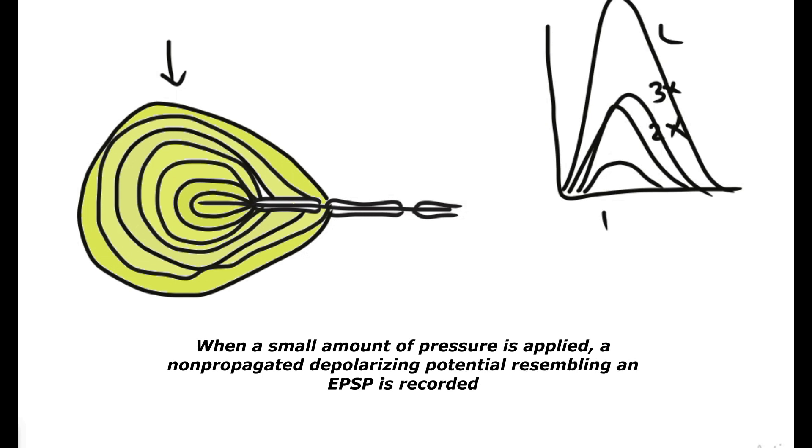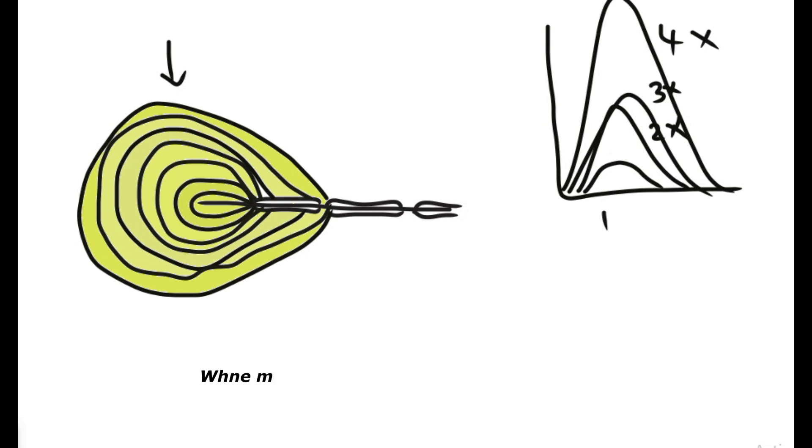The initial depolarization, non-propagating depolarization in the Pacinian corpuscle, is known as excitatory postsynaptic potential or otherwise called generator potential, which is exclusively produced in the sensory receptor itself. Once the threshold is reached around 10 mV, that triggers the action potential in the first node of Ranvier in the sensory fiber which emerges from the particular receptor.